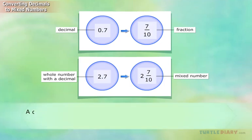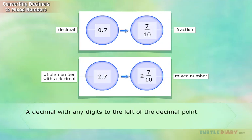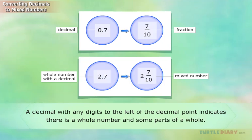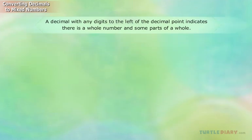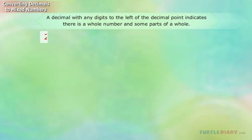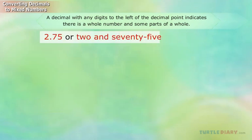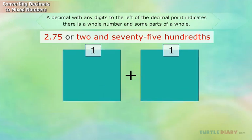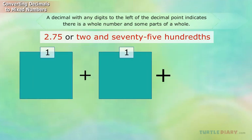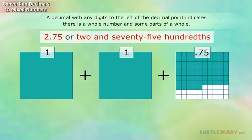A decimal with any digits to the left of the decimal point indicates there is a whole number and some parts of a whole. For example, 2.75 — or 2 and 75 hundredths — means there are two whole parts and an additional 75 out of 100 parts.